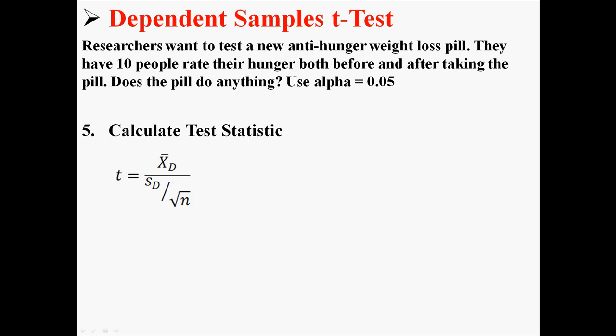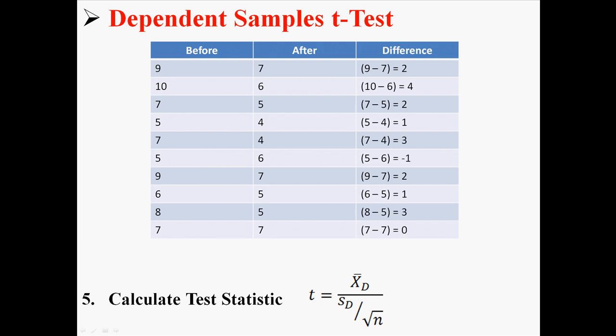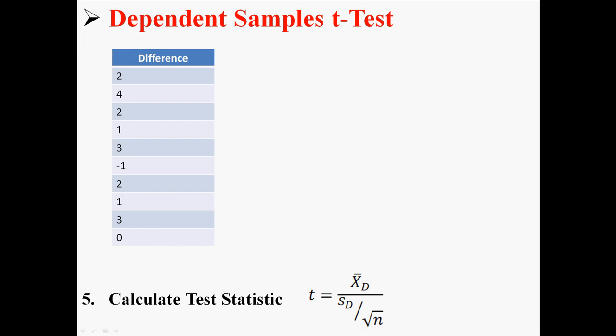Now let's calculate the t statistic. The equation for the dependent samples t-test has x-bar-d (the mean difference) on top, and the standard deviation of the differences divided by the square root of the sample size on the bottom. To find those difference scores, I create a new column: for each participant I subtract after from before. For example, 9 minus 7 equals 2. After doing this for all participants, I have 10 difference scores, and we use just these to run our test.